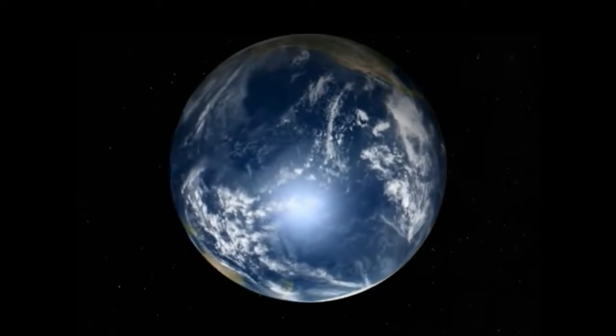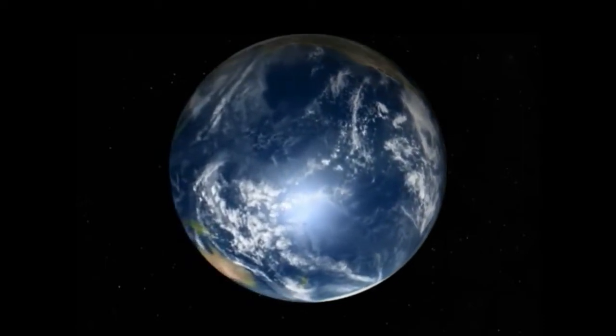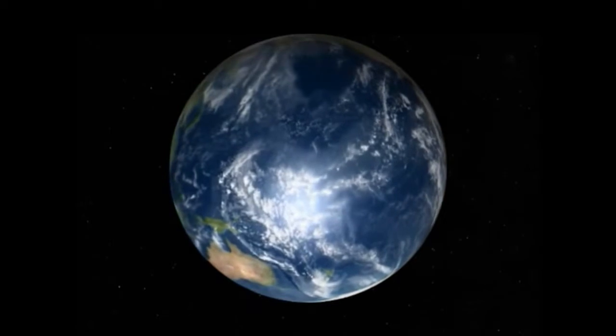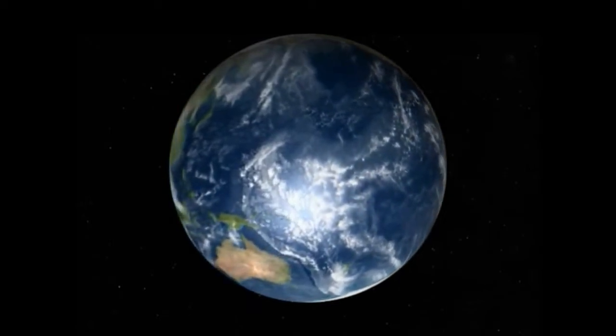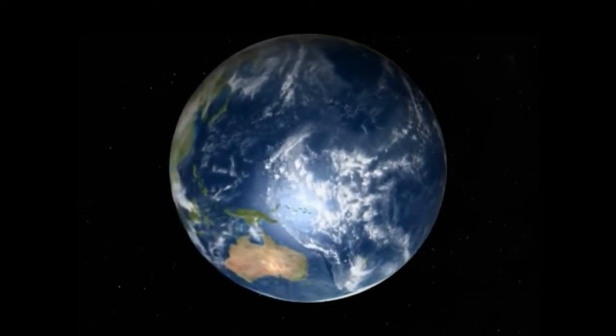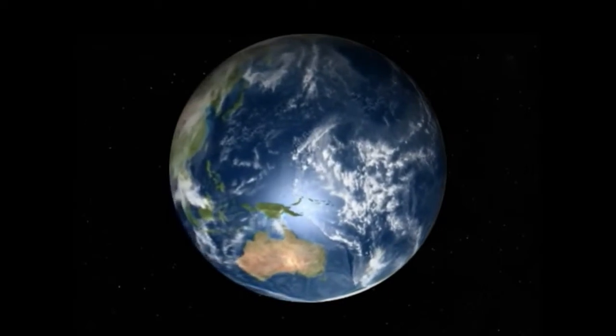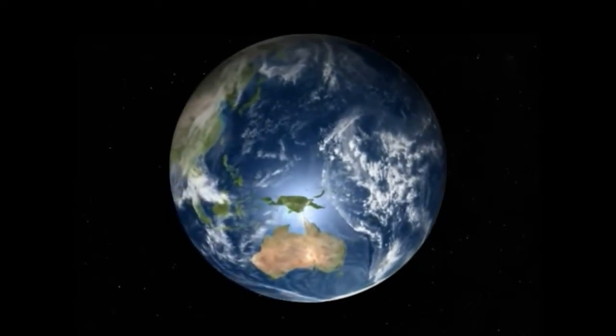So taking that into account then, the northern hemisphere of the Earth would then be on the bottom of the Earth, Australia you see there, and the southern hemisphere would be where most of the landmass is on top of the Earth.